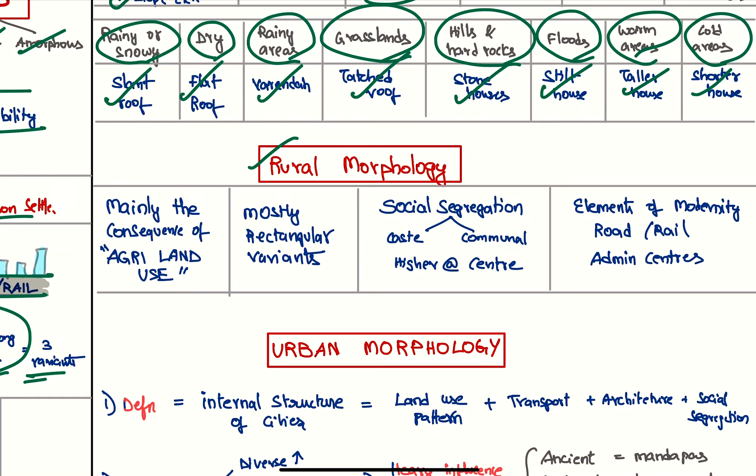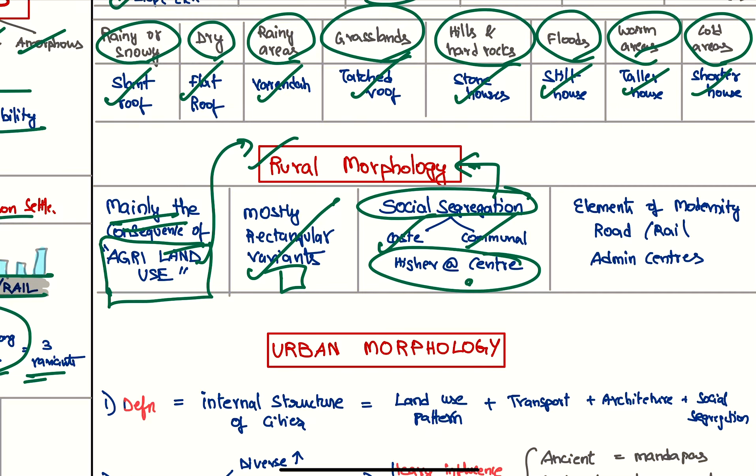Next we have rural morphology. Single most factor affecting the rural morphology is the agricultural land use. So this is the main factor. Most will be rectangular patterns because they are most convenient, and social segregation is very strong in rural morphology, especially caste and communal segregation. Higher and richer castes generally live in the center of the villages, and lower castes live in the periphery of the villages. Next we have elements of modernity like roads and rails and administrative centers.